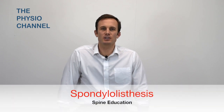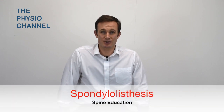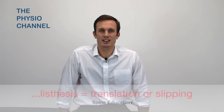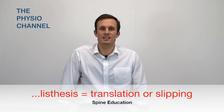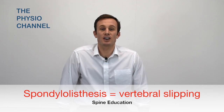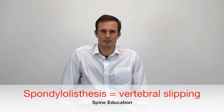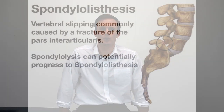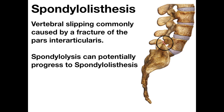Finally, spondylolisthesis is a real tongue twister. The lysthesis part means translation or slipping, so spondylolisthesis means a vertebral slipping. The slipping is commonly caused by a fracture of the pars interarticularis, so there is a link between spondylolysis and spondylolisthesis.